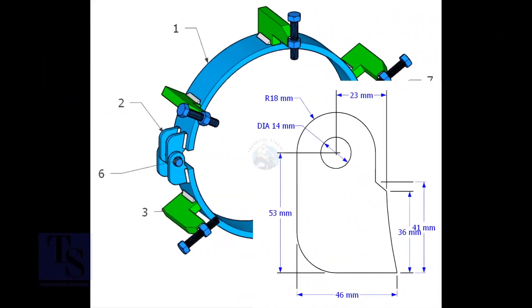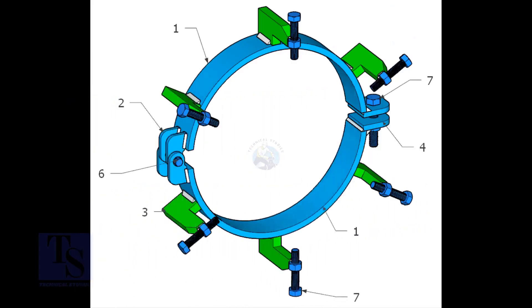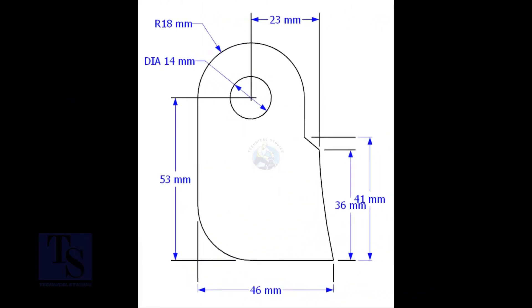Cut item number two from 8 or 10 millimeters thick plate. The quantity is four numbers.